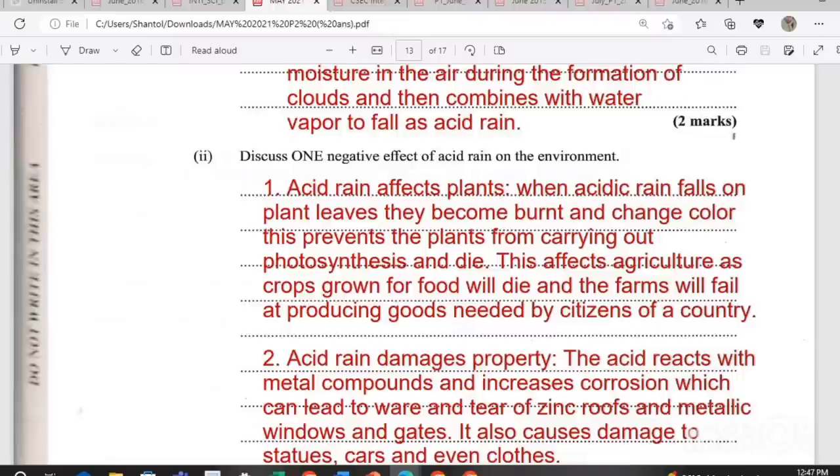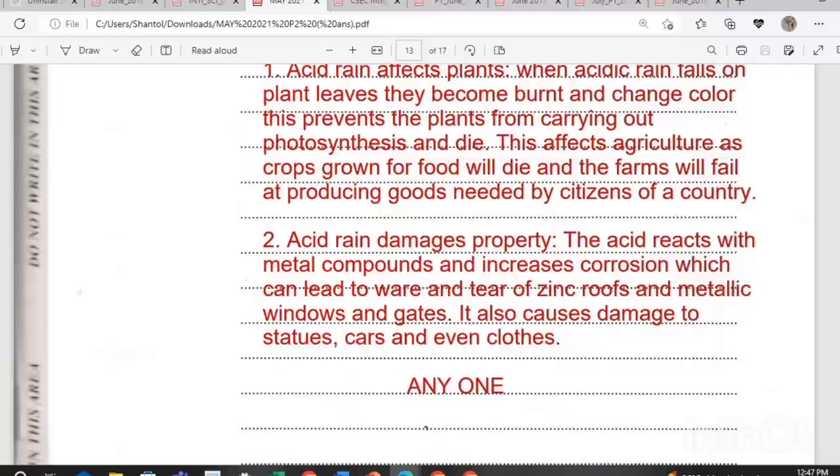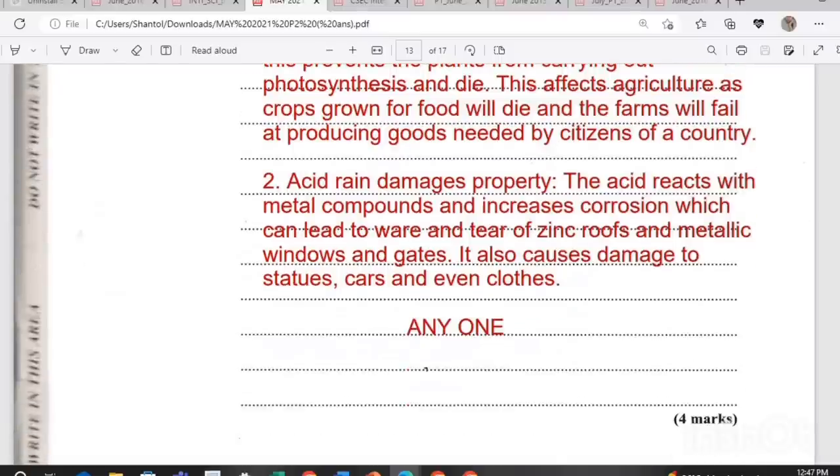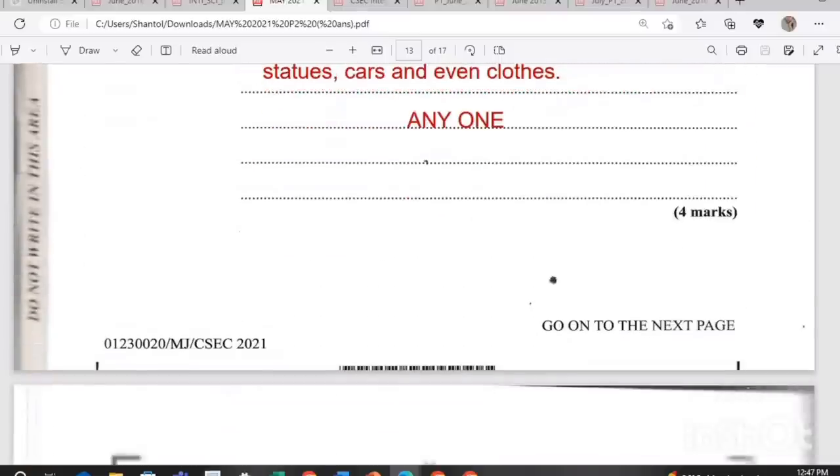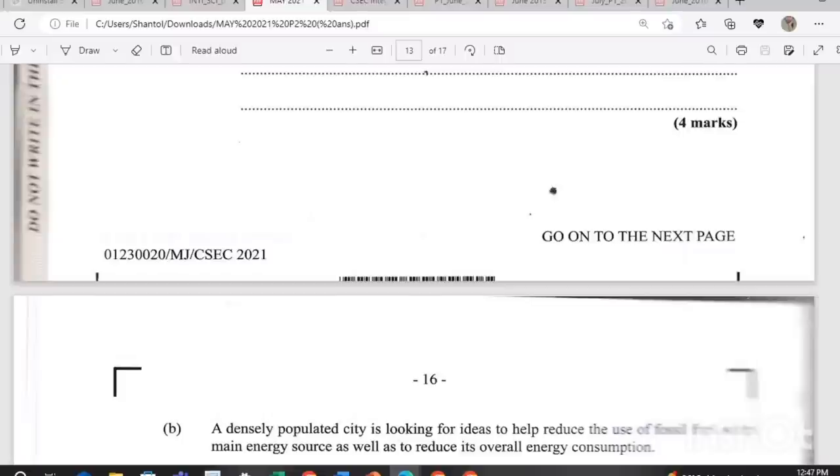Discuss one negative effect of acid rain on the environment. Acid rain affects plants. When acidic rain falls on plant leaves, they become burnt and change color and this prevents the plant from carrying out photosynthesis and they can die. This also affects agriculture as crops grown for food will die and the farms will fail at producing goods needed by citizens of a country. The other negative effect is that acid rain can damage property. The acid reacts with metal compounds and increases corrosion which can lead to wear and tear of metallic roofs such as zinc and metallic windows and gates.